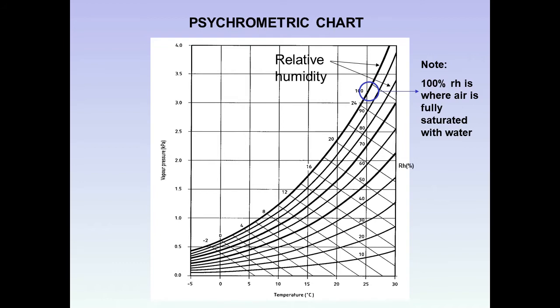The relative humidity lines are at 100%, 90%, 80%, 70%, and so forth. The scale on the right is relative humidity, and the scale at the bottom is temperature.